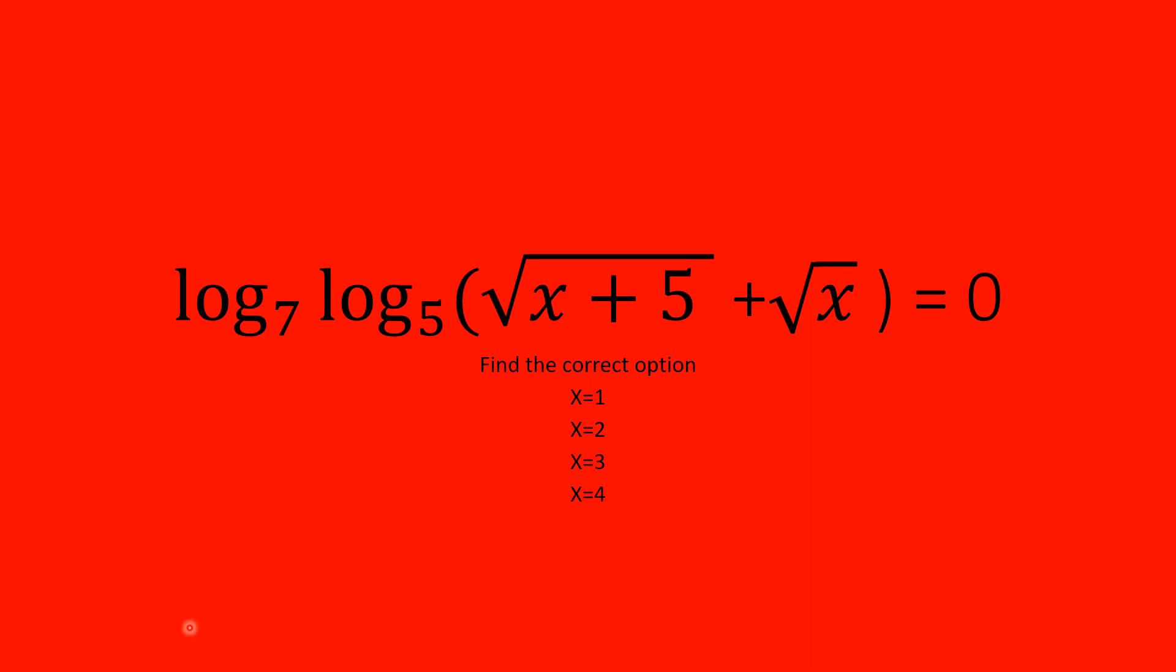The question is given to you: log to the base 7, log to the base 5, under root of x plus 5 plus under root of x is equal to 0. You have to find the correct option. x may be 1, 2, 3, or 4.